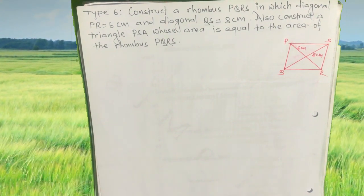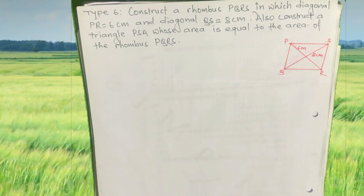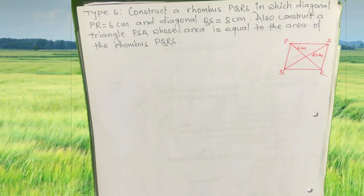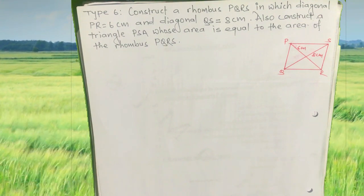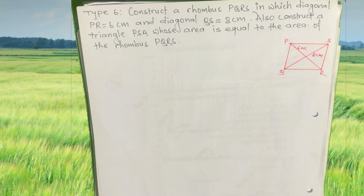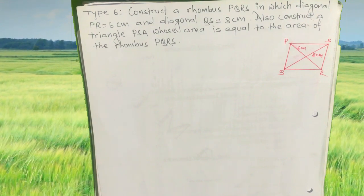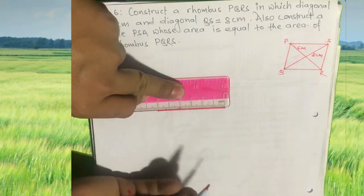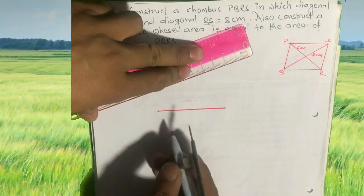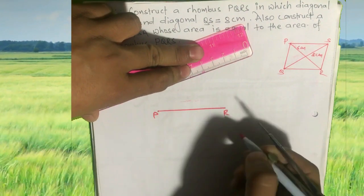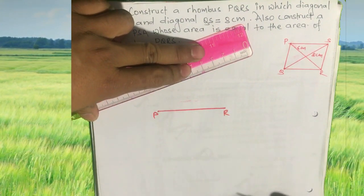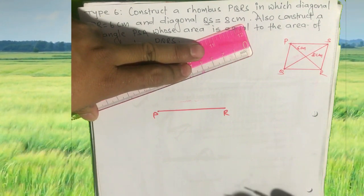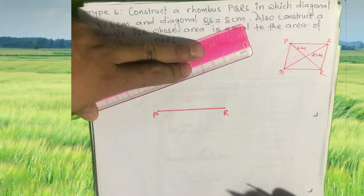First, construct rhombus PQRS. You are given diagonal PR equals 6 cm and diagonal QS equals 8 cm. First, draw diagonal PR of 6 cm. The diagonals of a rhombus bisect each other perpendicularly, so draw a perpendicular bisector of PR.